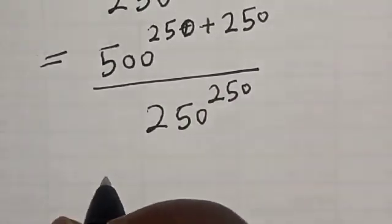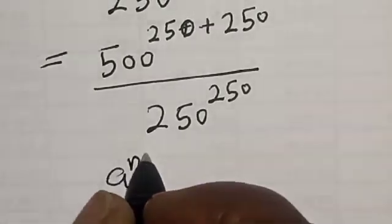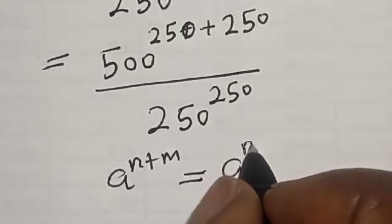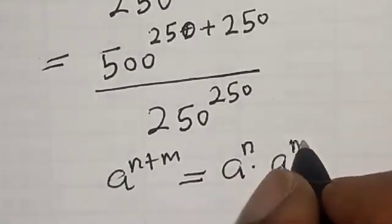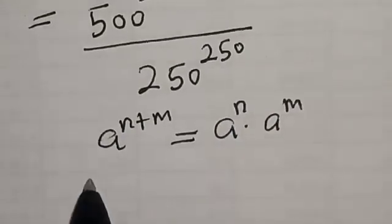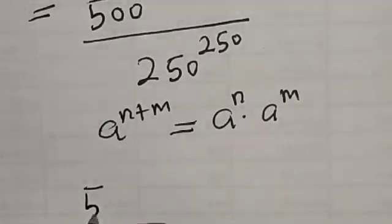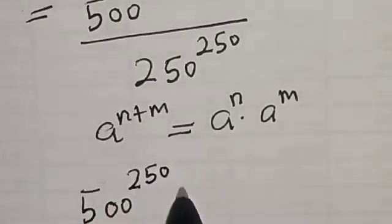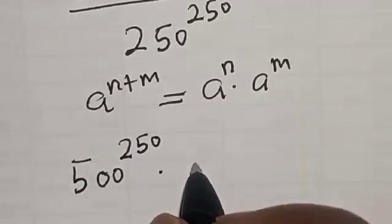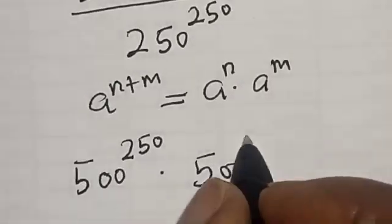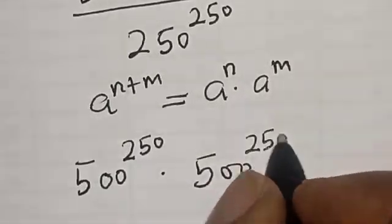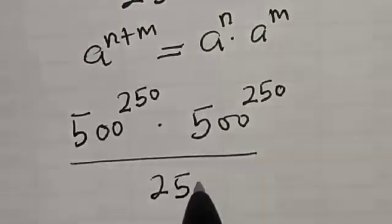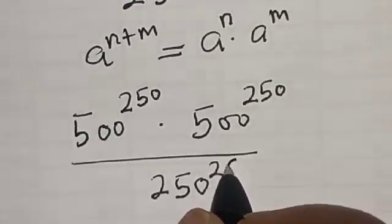Remember this rule: if you have A raised to power N plus M, this is equal to A raised to power N multiplied by A raised to power M. Then we have 500 raised to power 250 multiplied by 500 raised to power 250, divided by 250 raised to power 250.